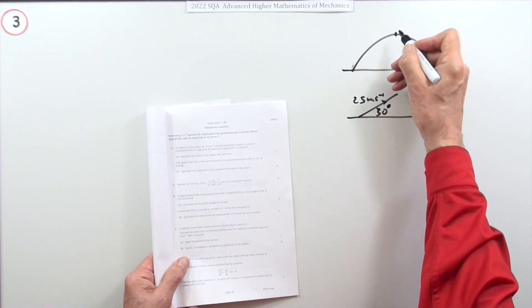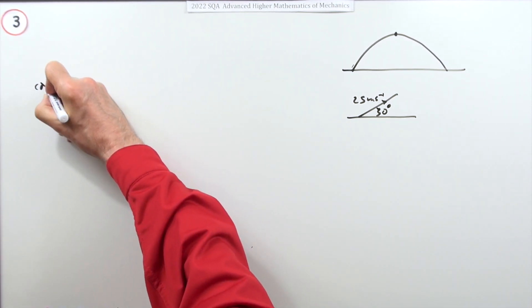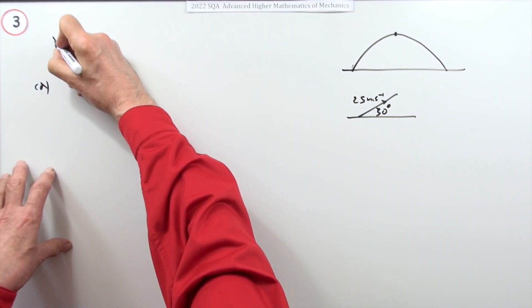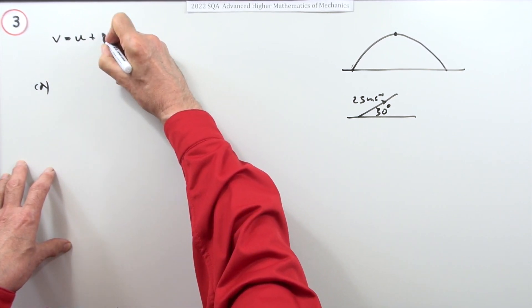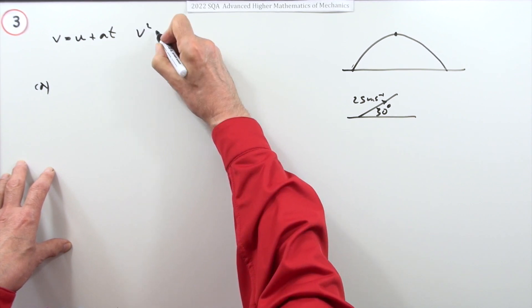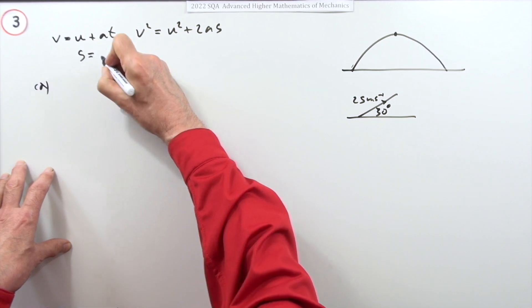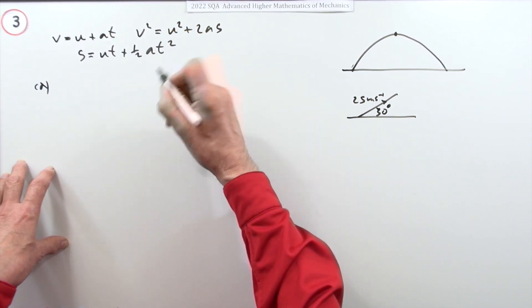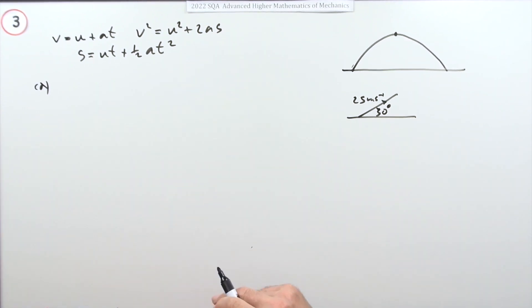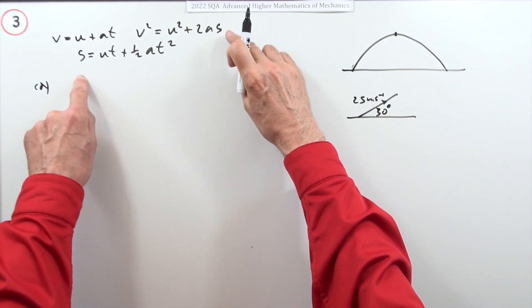Calculate the maximum height for two marks. Let's lay out the little menu you've got to select from: v equals u plus at, or v squared is u squared plus 2as, or the distance s equals ut plus a half at squared. That's your formulas for constant acceleration.